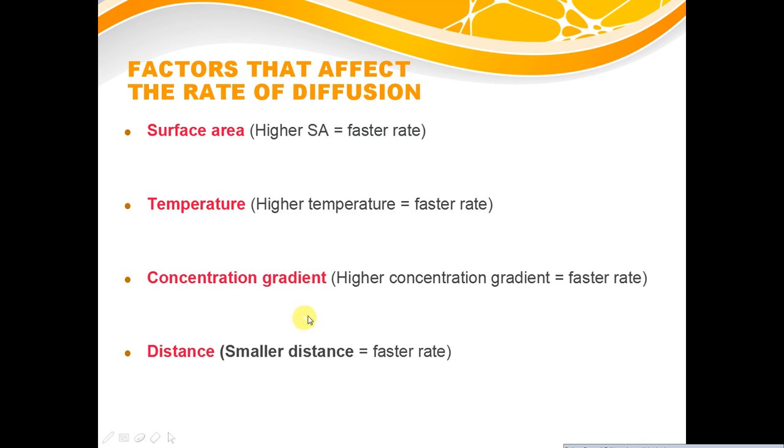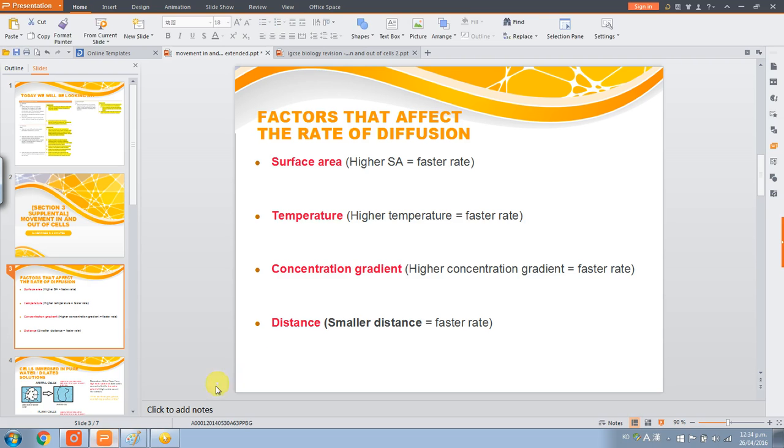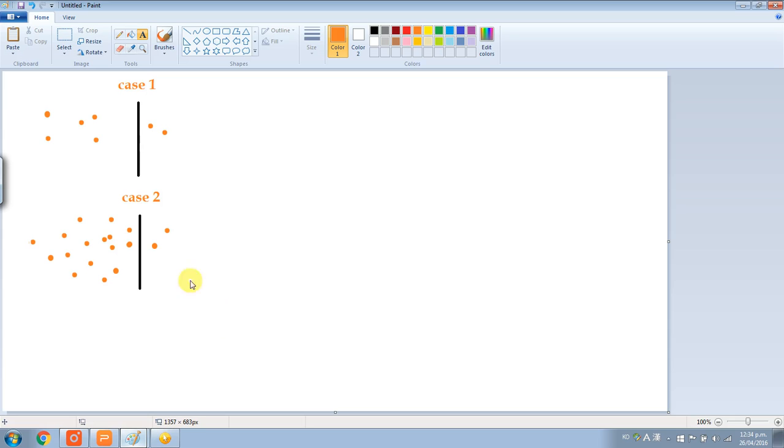Thirdly, we've got concentration gradient. The higher the concentration gradient, the faster the rate of diffusion. Once again, in a diagram, we've got case one and case two. In case one, on the left-hand side you've got five molecules, on the right-hand side you have two. So there's a concentration gradient from the left to the right.